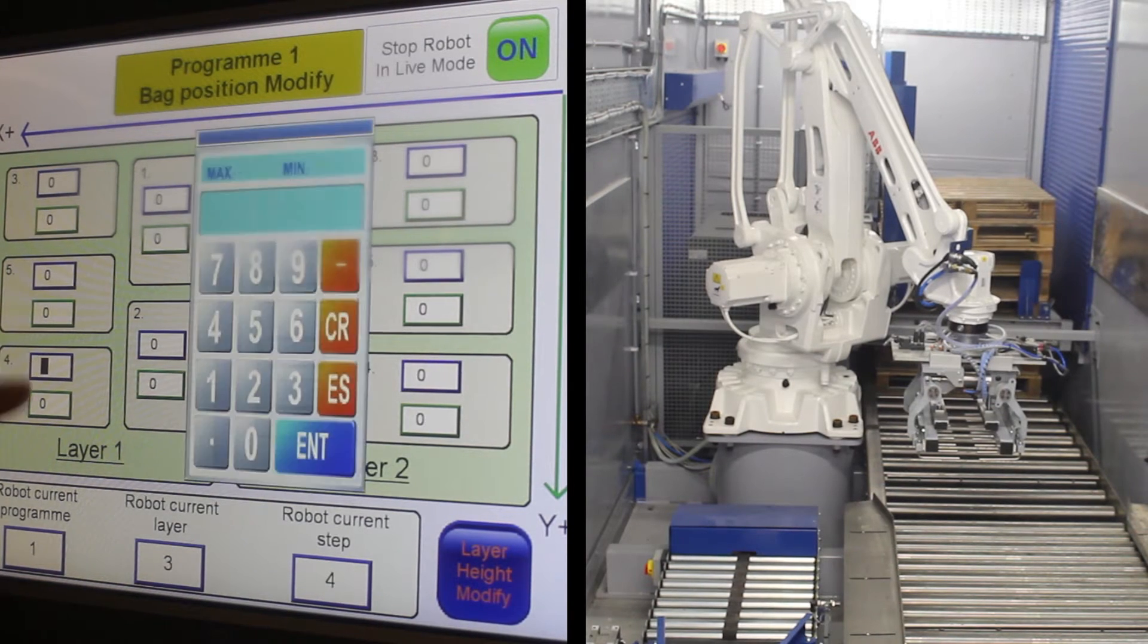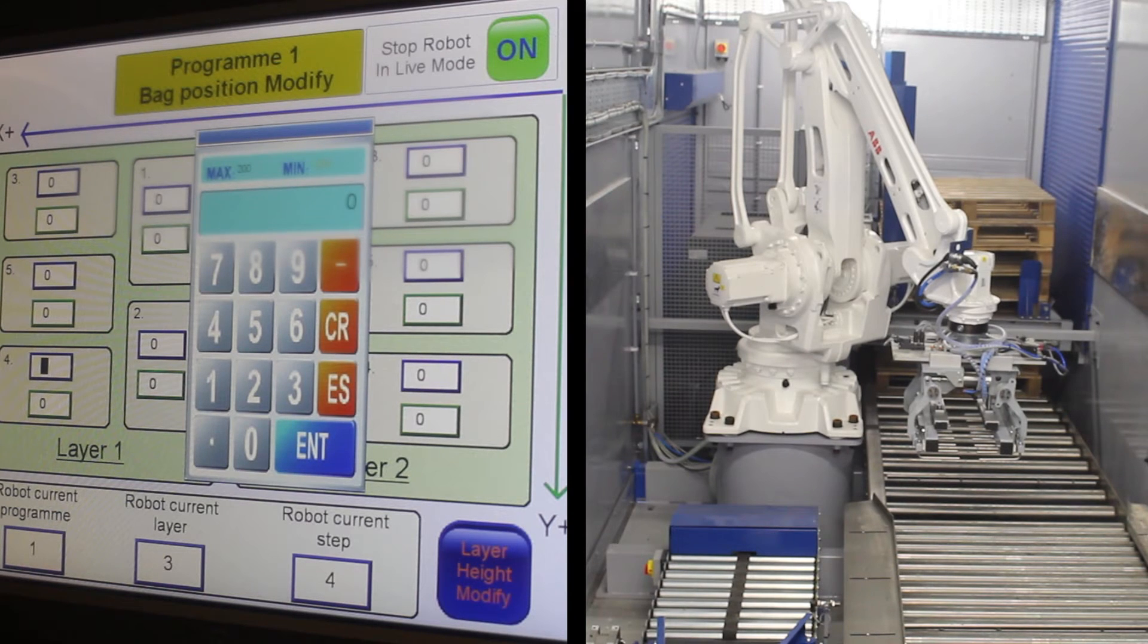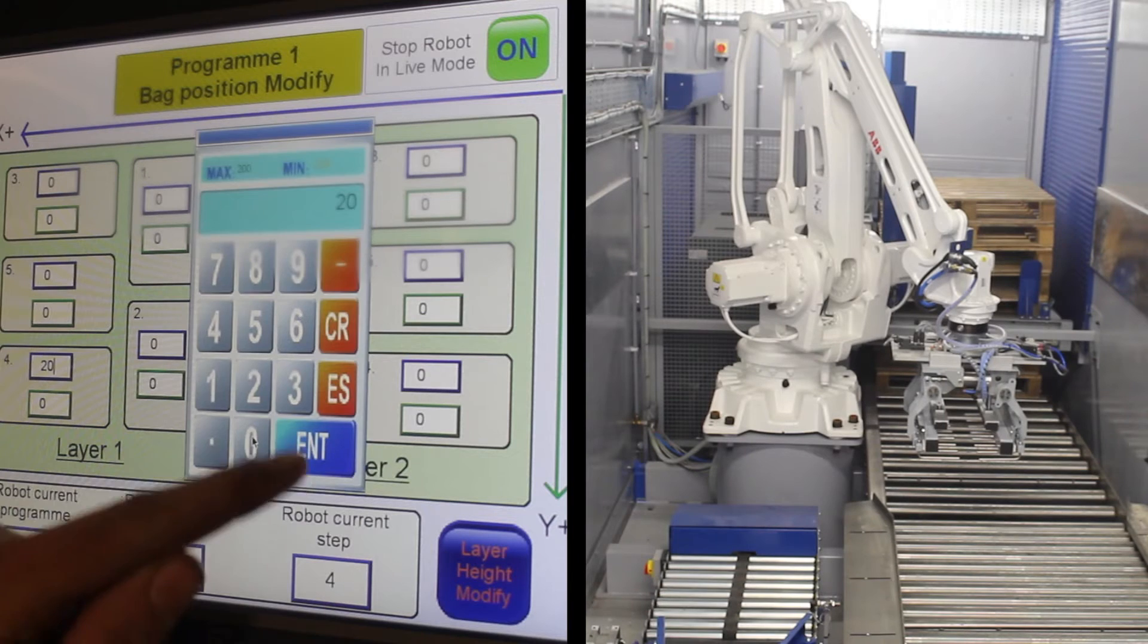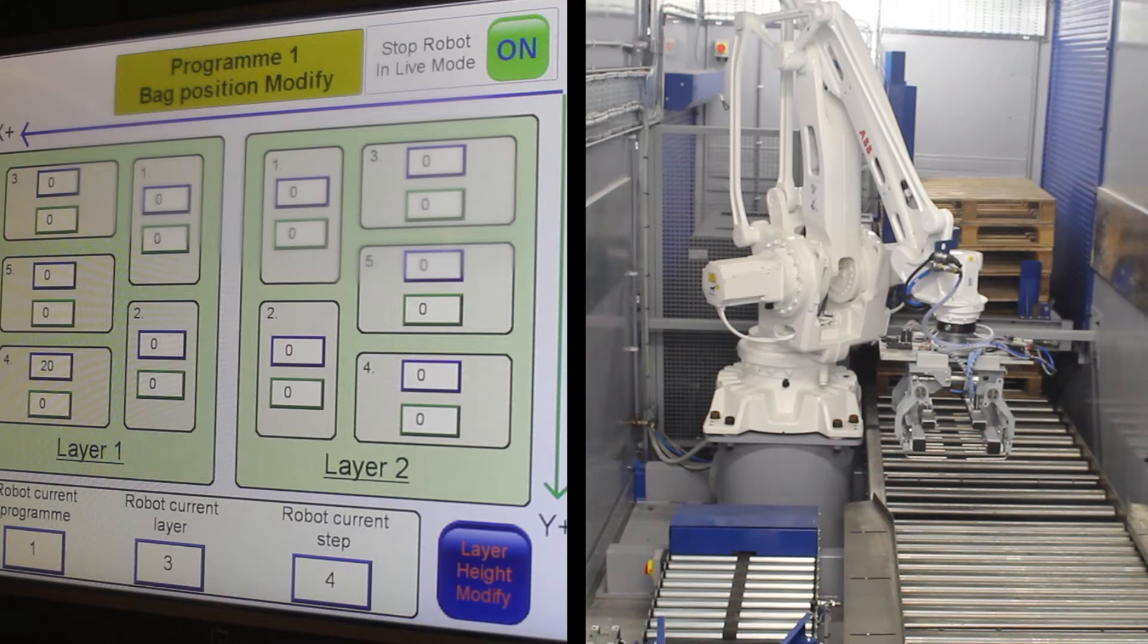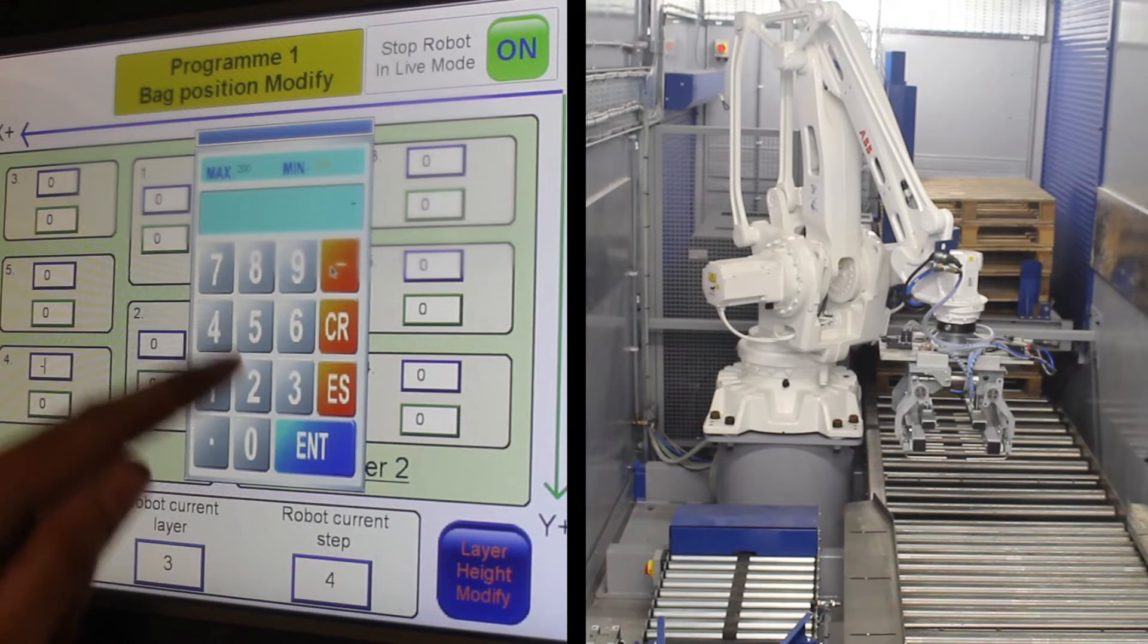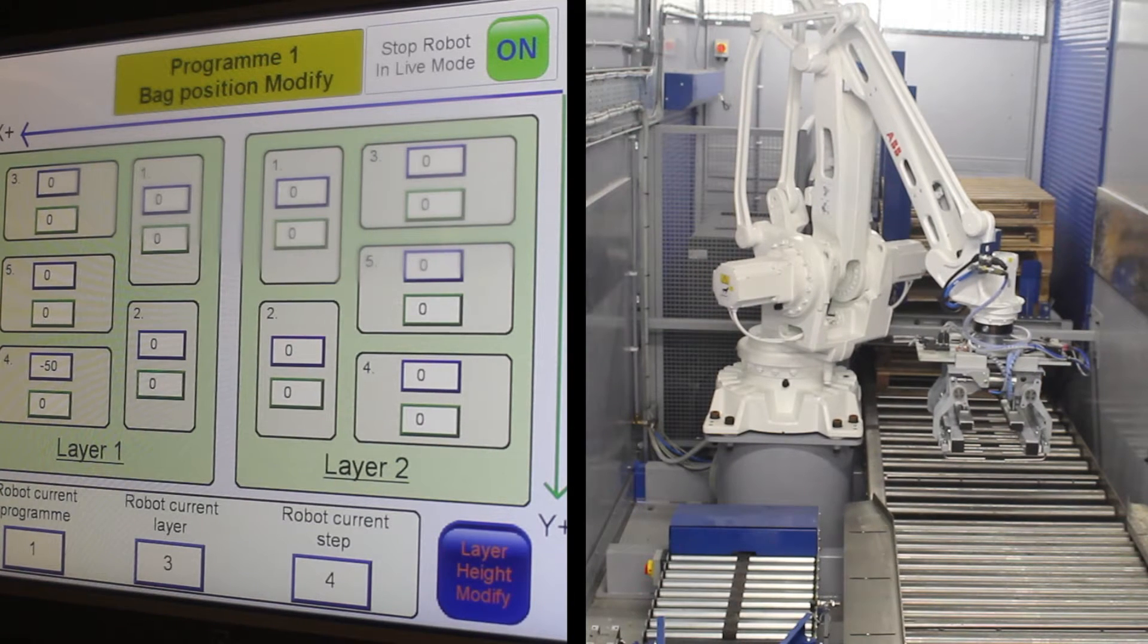What you do then is you add in, if you want to add it to move it across towards the robot more, you add in 20mm. If you need to go the opposite way, you can minus 50mm and it will go the opposite way.